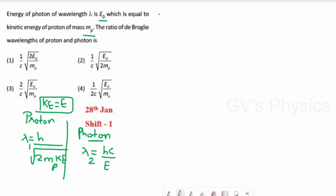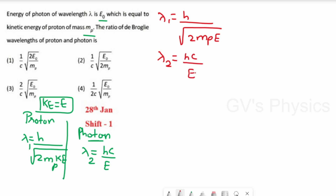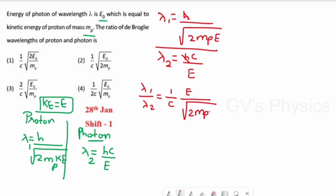Since the kinetic energy of the proton and energy of the photon are both equal to E₀, we substitute E for both. Taking the ratio λ₁/λ₂: the h terms cancel, giving (1/C) · E/√(2MₚE). Writing E = √E · √E, one √E cancels, leaving λ₁/λ₂ = (1/C)·√(E₀/2Mₚ). So option 2 is the right answer.